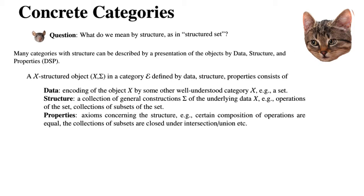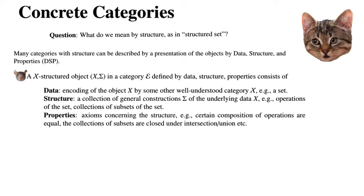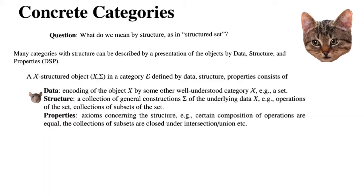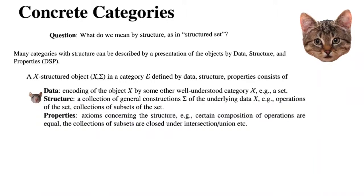What we mean by this is that an X-structured object, X-sigma, in a category E, defined by data-structure-properties, consists of data — which is an encoding of the object by some other well-understood category X, usually a set. The structure is a collection of general constructions, sigma, of the underlying data X — for example, operations on the set or collections of subsets of the set, and so on.